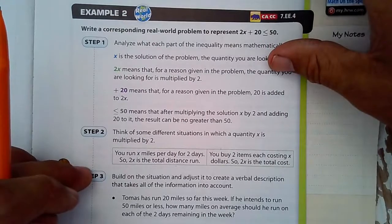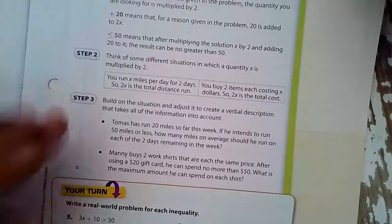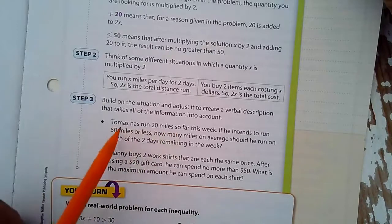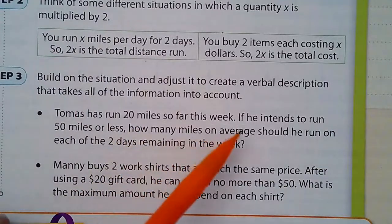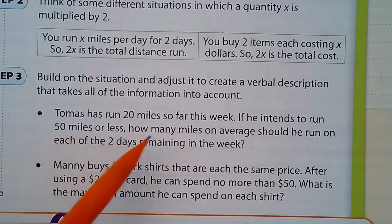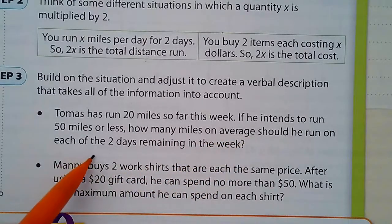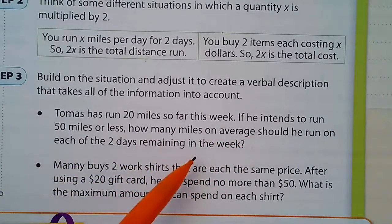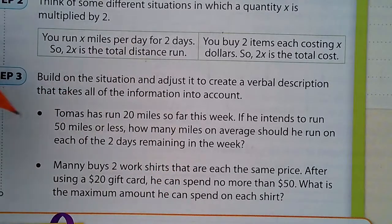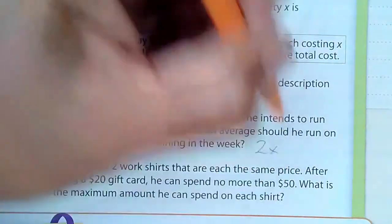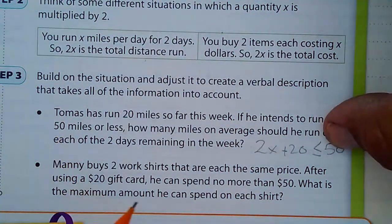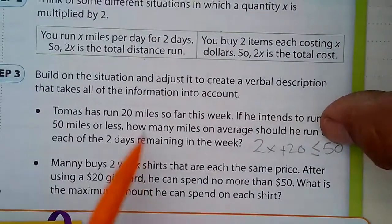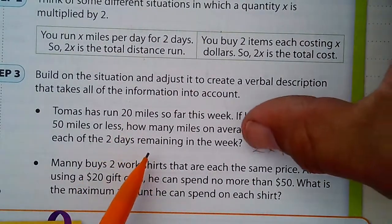So we build on that and we come up with something like this. Thomas has run 20 miles so far this week. I'm going to zoom in a bit. If he intends to run 50 miles or less, how many miles on average should he run on each of the two days remaining in the week? So this is the case for 2x. 2x plus 20 is less than or equal to 50. He wants to run 50 miles or less. So that's our target. And this has to be what he runs is 50 miles or less. He's already run 20. So there's two days remaining. How much each day?